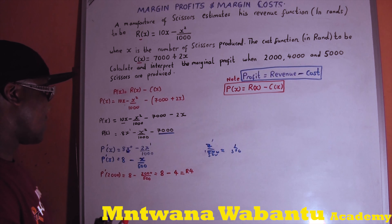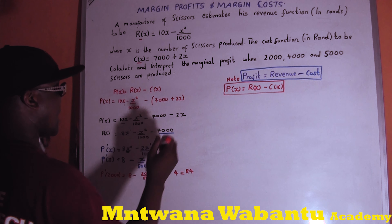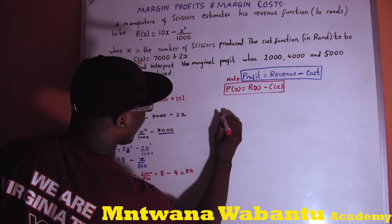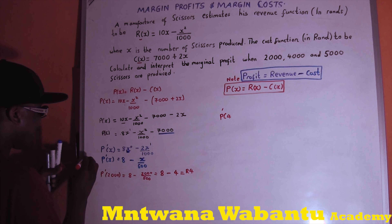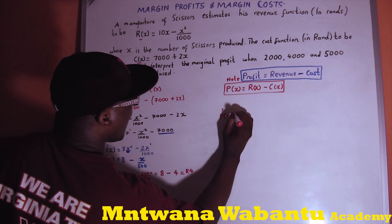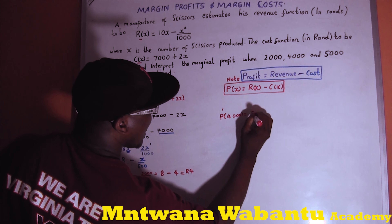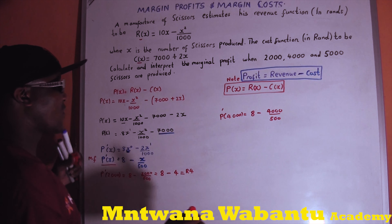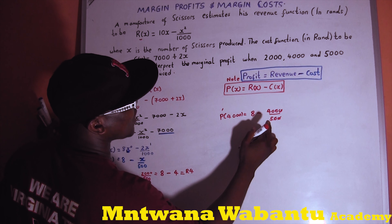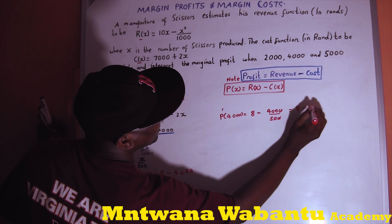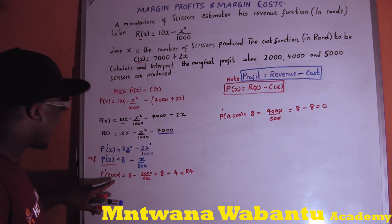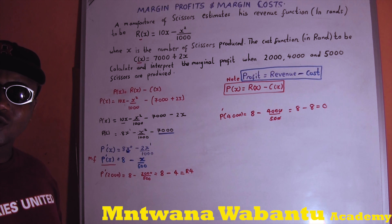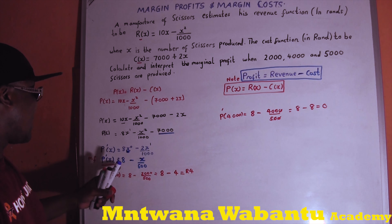Now let's see what happens when x equals 4000. So marginal profit of 4000 equals 8 minus 4000 over 500. 4000 divided by 500 equals 8, so we get 8 minus 8 equals zero. So when I doubled the number of scissors from 2000 to 4000 I make no profit at all.